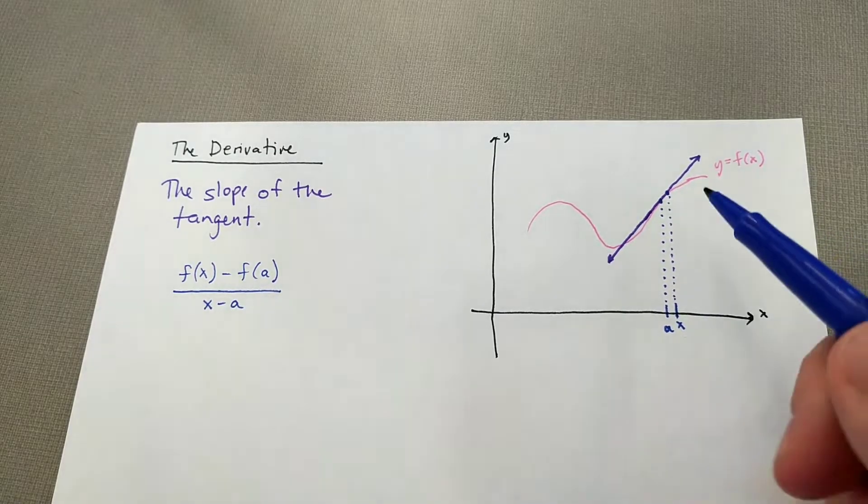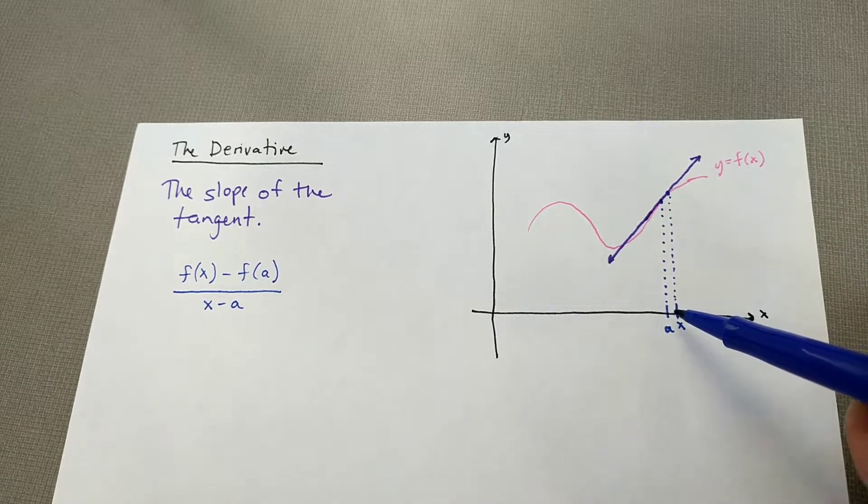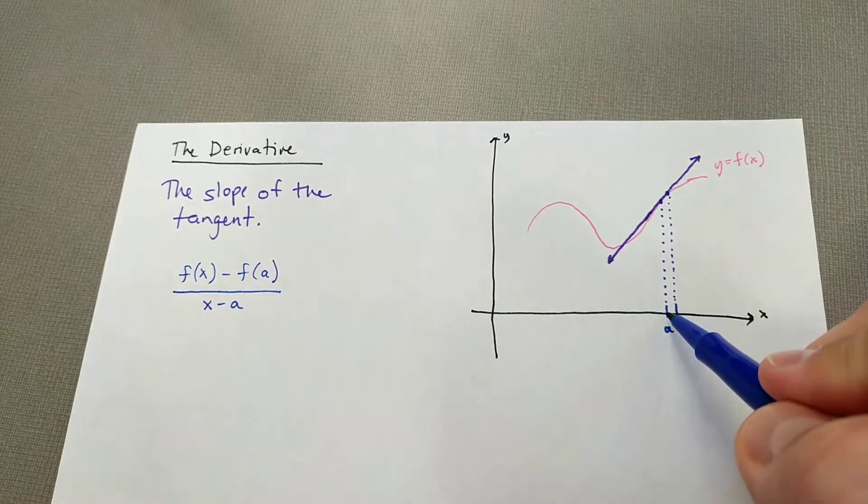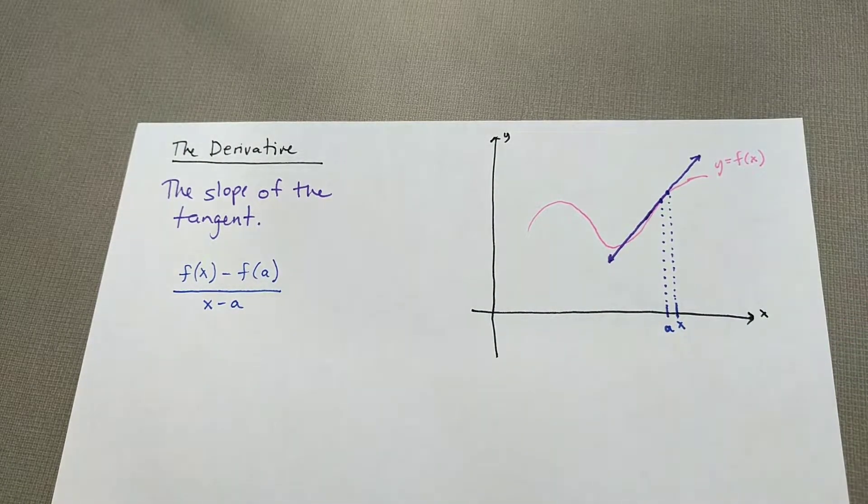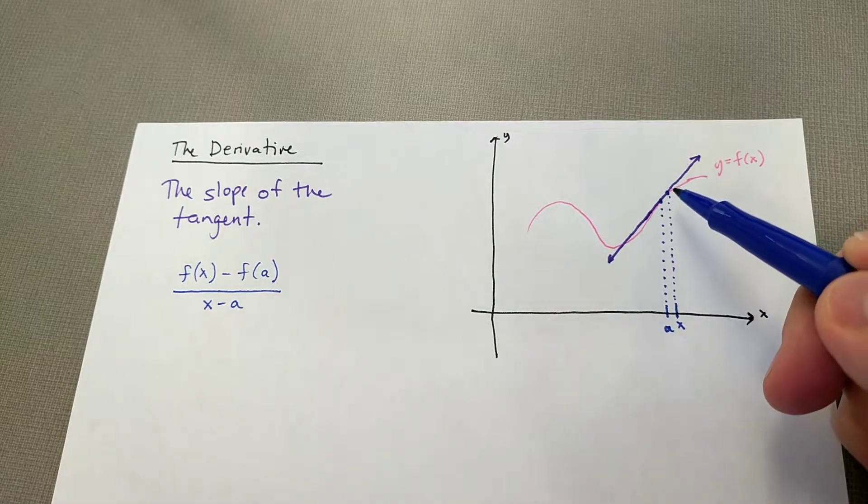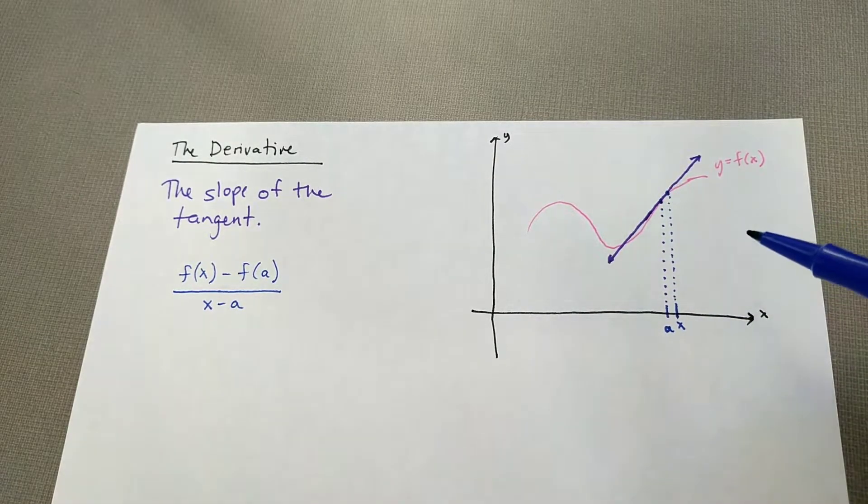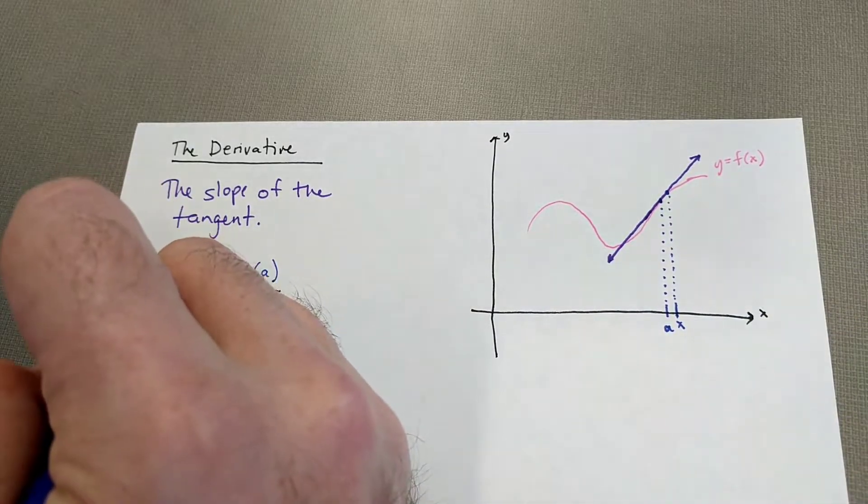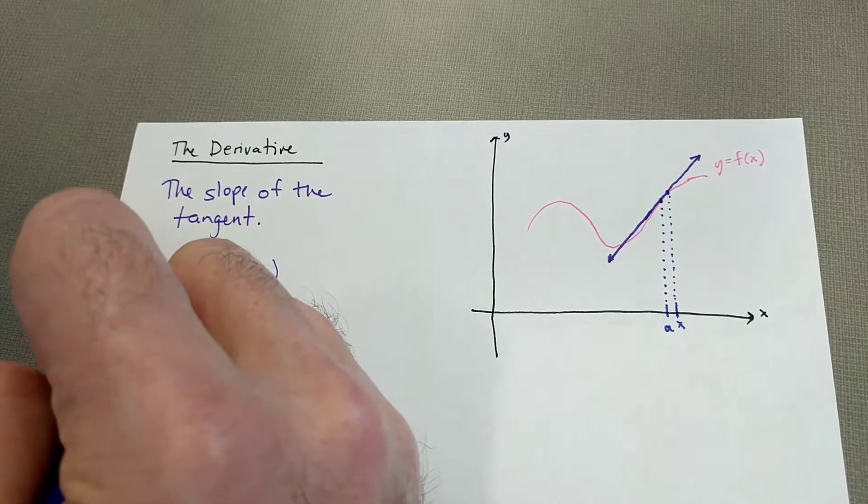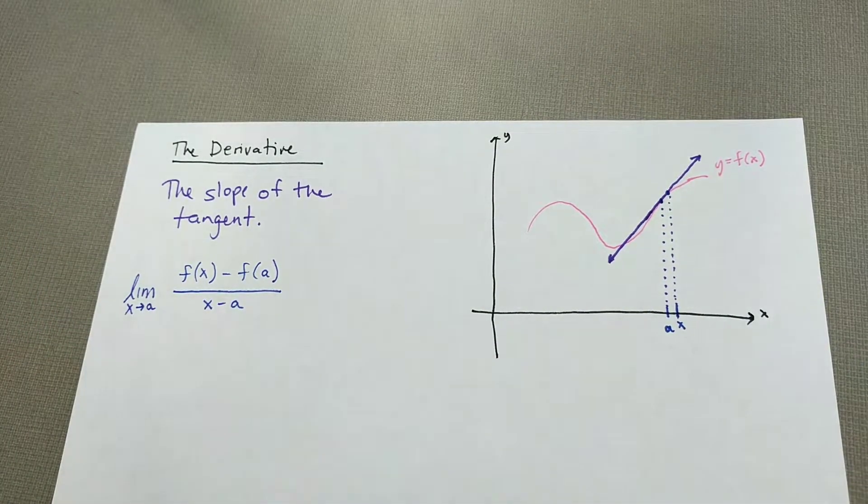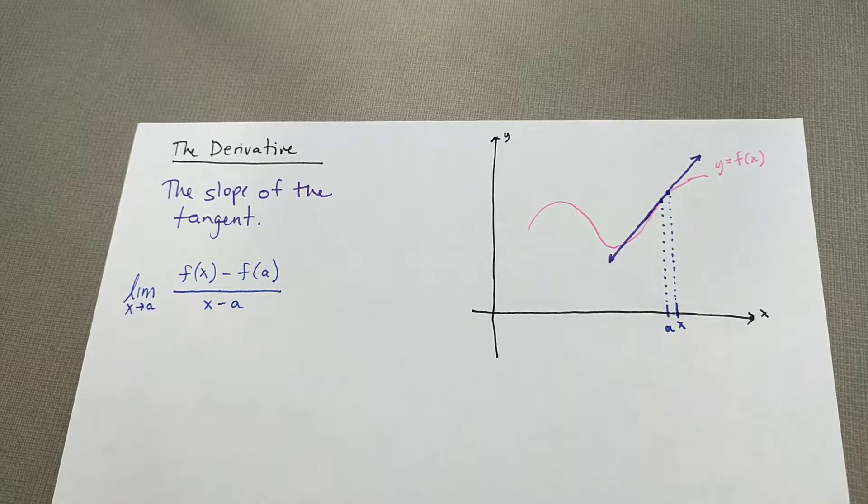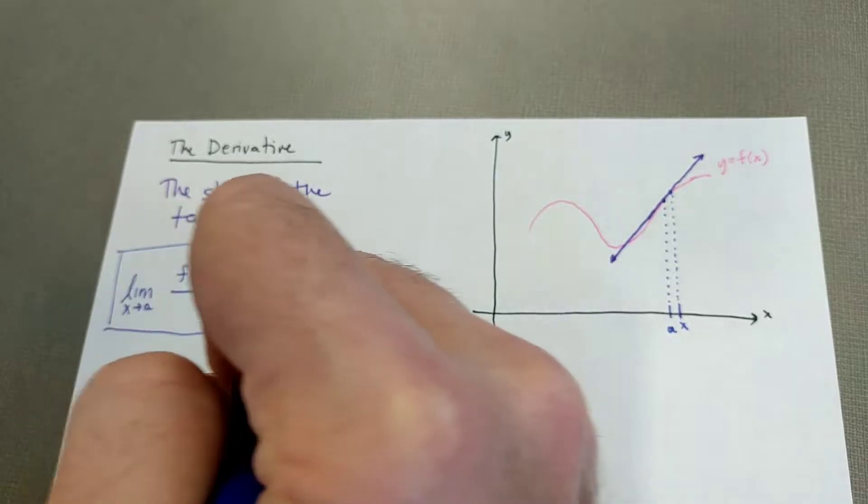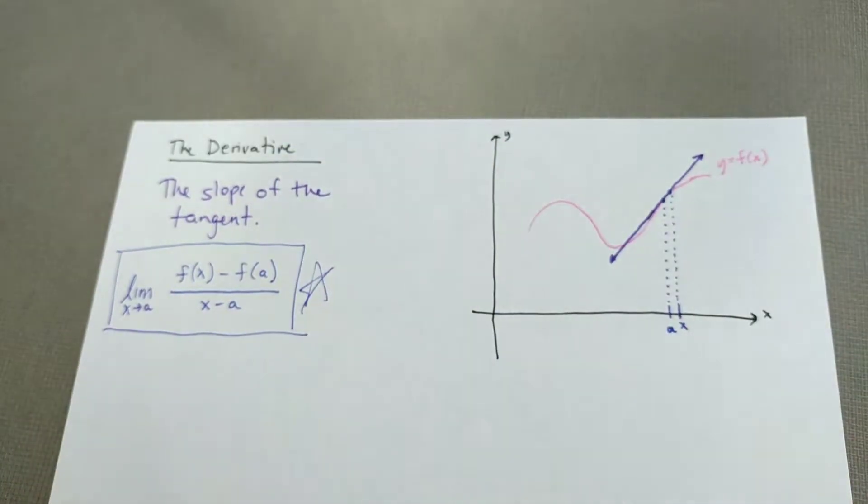But instantaneous actually talks about sort of these two points getting closer together. So what happens if we move X closer to A? Well, then it starts to become more like this line is going through just A and not through X anymore. So if we want X to get closer to A, we'll take the limit as X approaches A. So that's our very first definition of a derivative. It's basically the limit of the average rate of change formula.